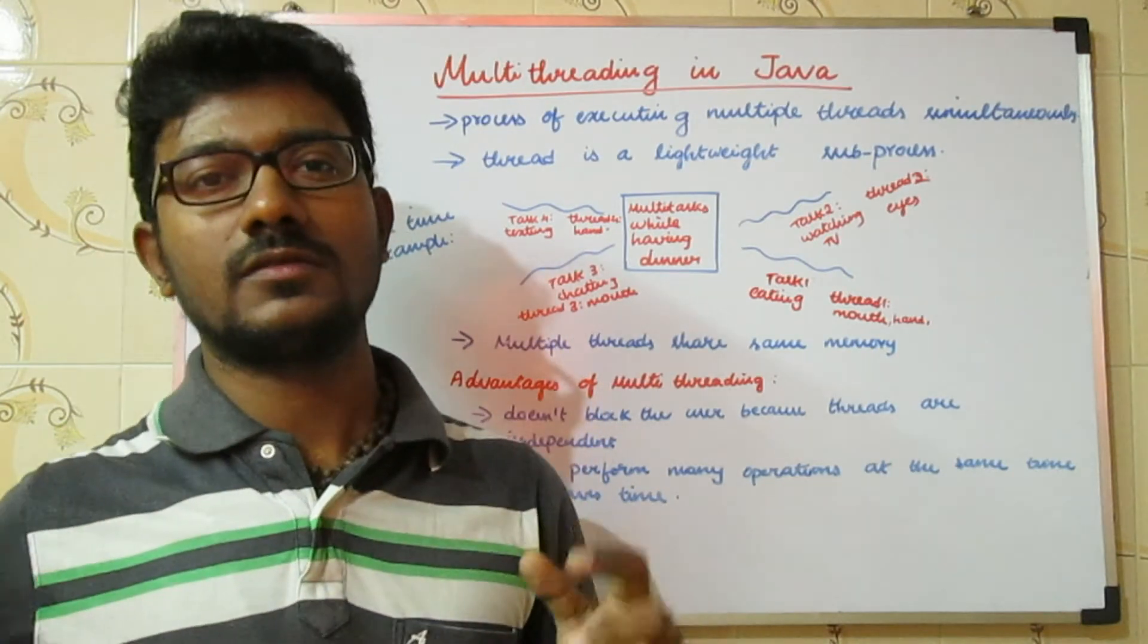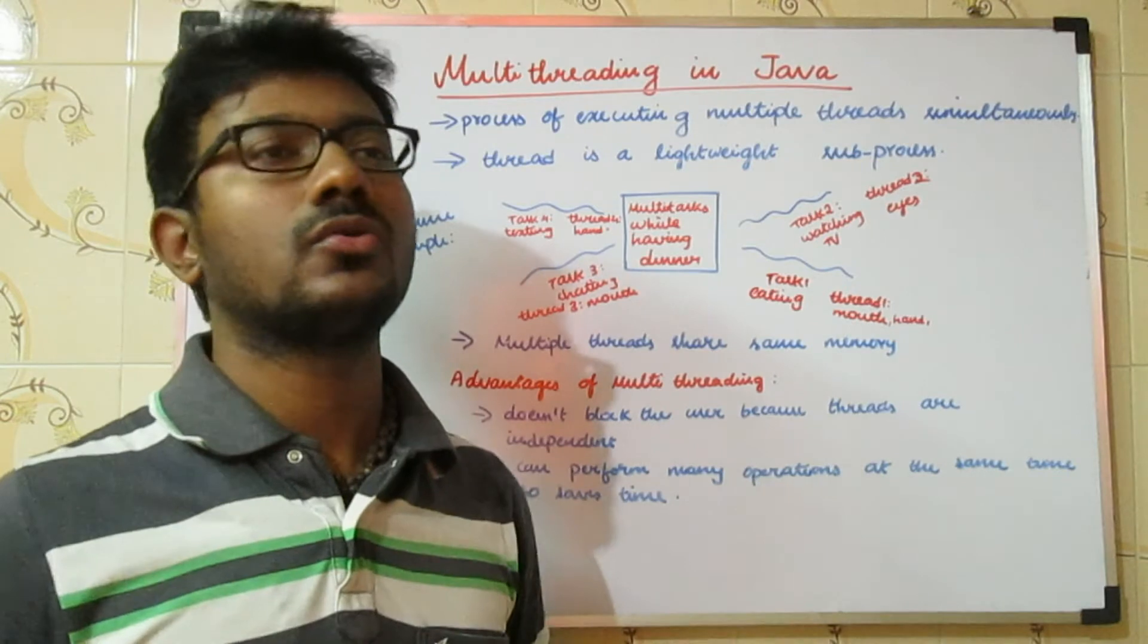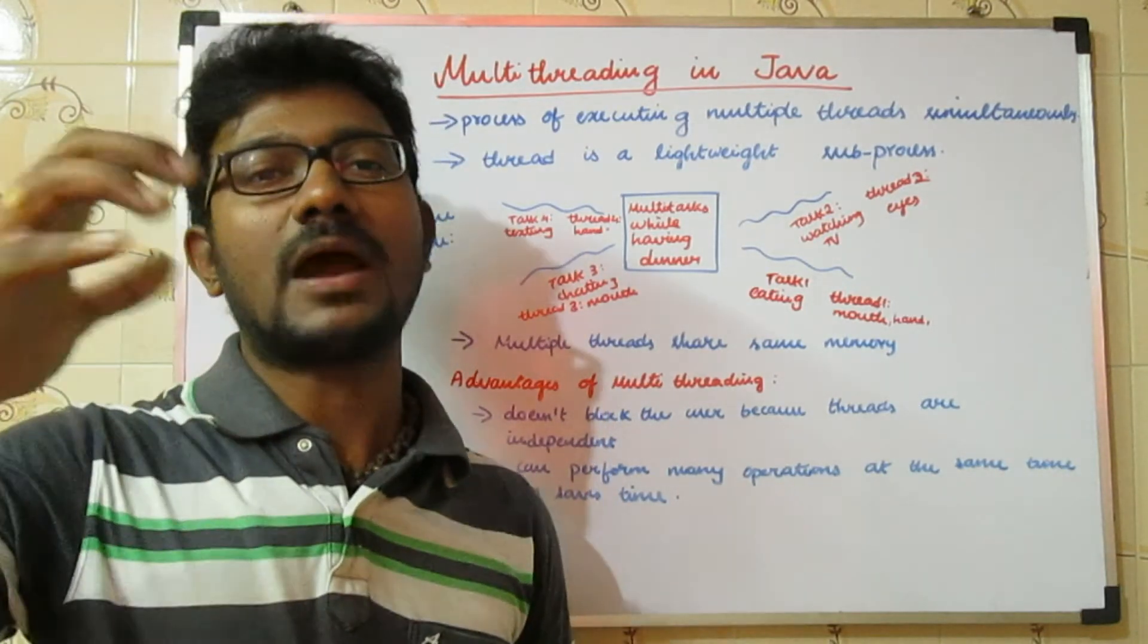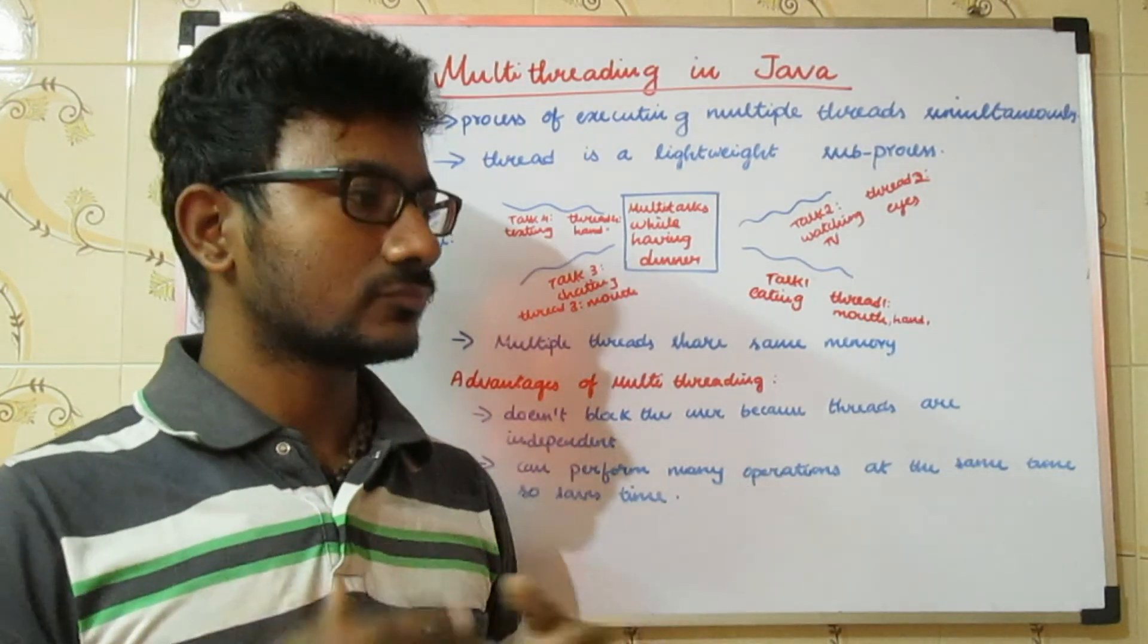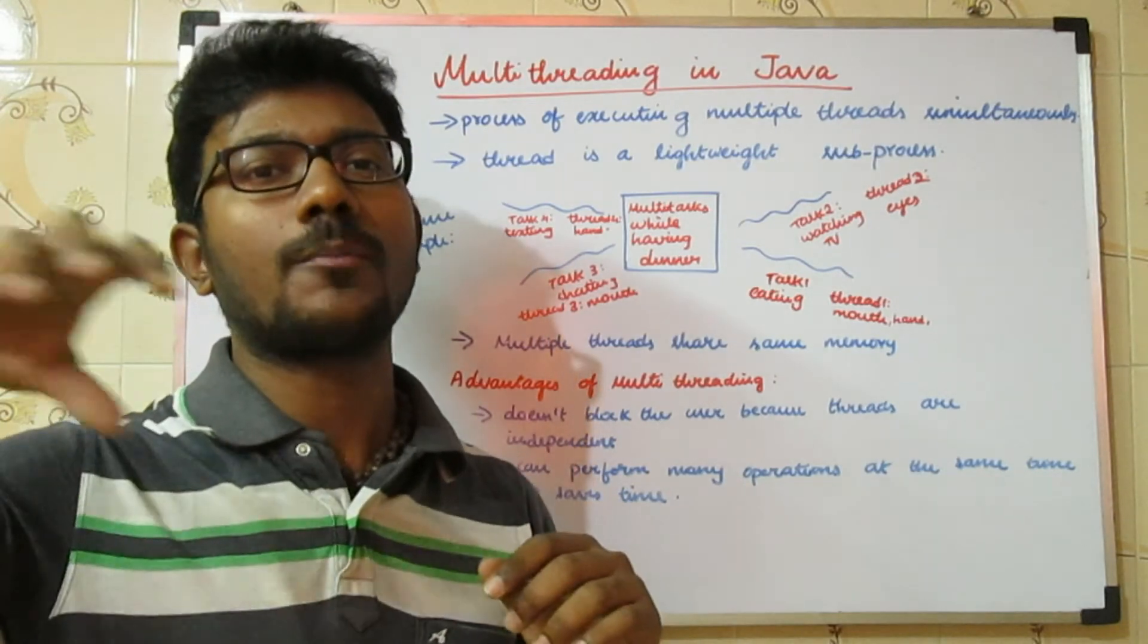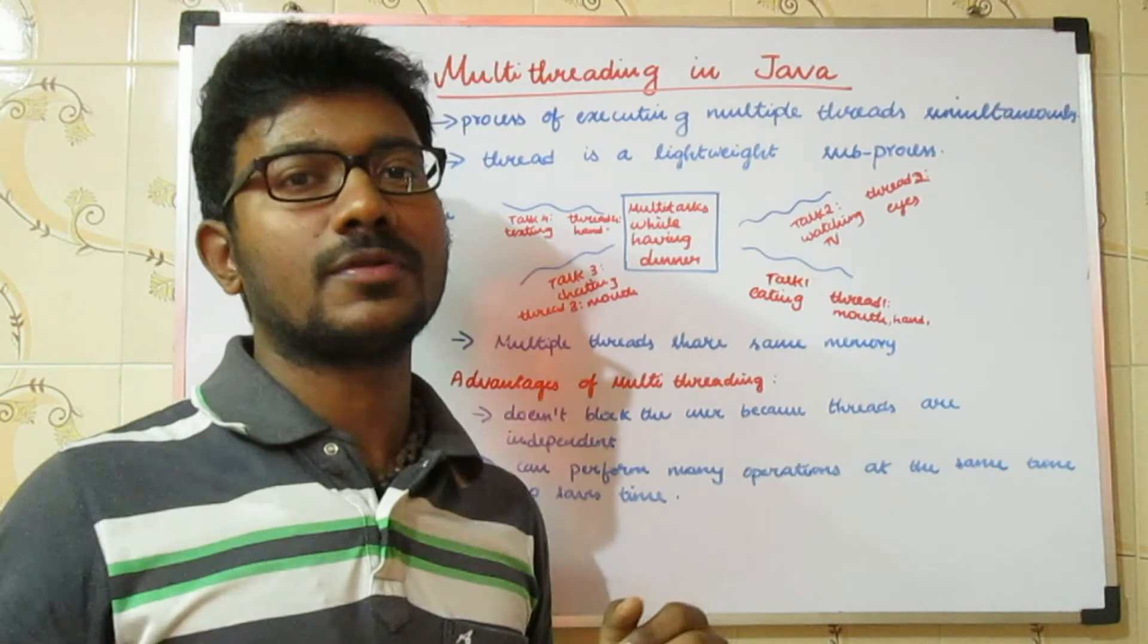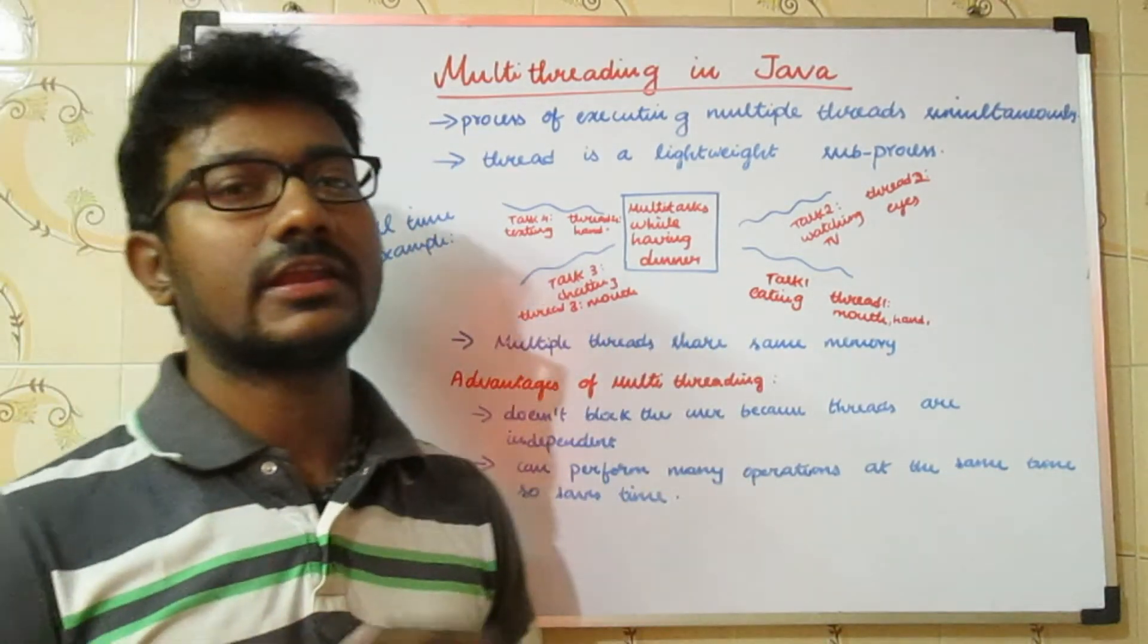In programming terminologies, each task is executed by a thread. In case of Java, JVM allocates a thread for each task. For example, if you are saving a document, that save operation is allocated by the save thread, and grammar check operation is allocated by the grammar check thread. Each task is allocated by some thread.